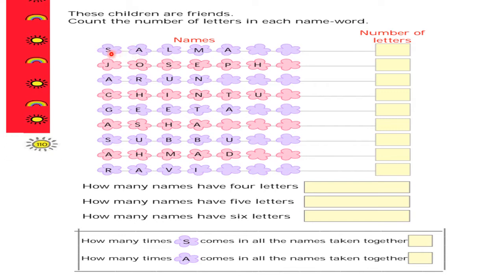The first name is S-A-L-M-A, that is Salma. Let's count the letters: one, two, three, four, and five. There are five letters in this name: S, A, L, M, A — Salma. Now the second name is J-O-S-E-P-H, that is Joseph. Let's count how many letters there are: one, two, three, four, five, and six. There are six letters.